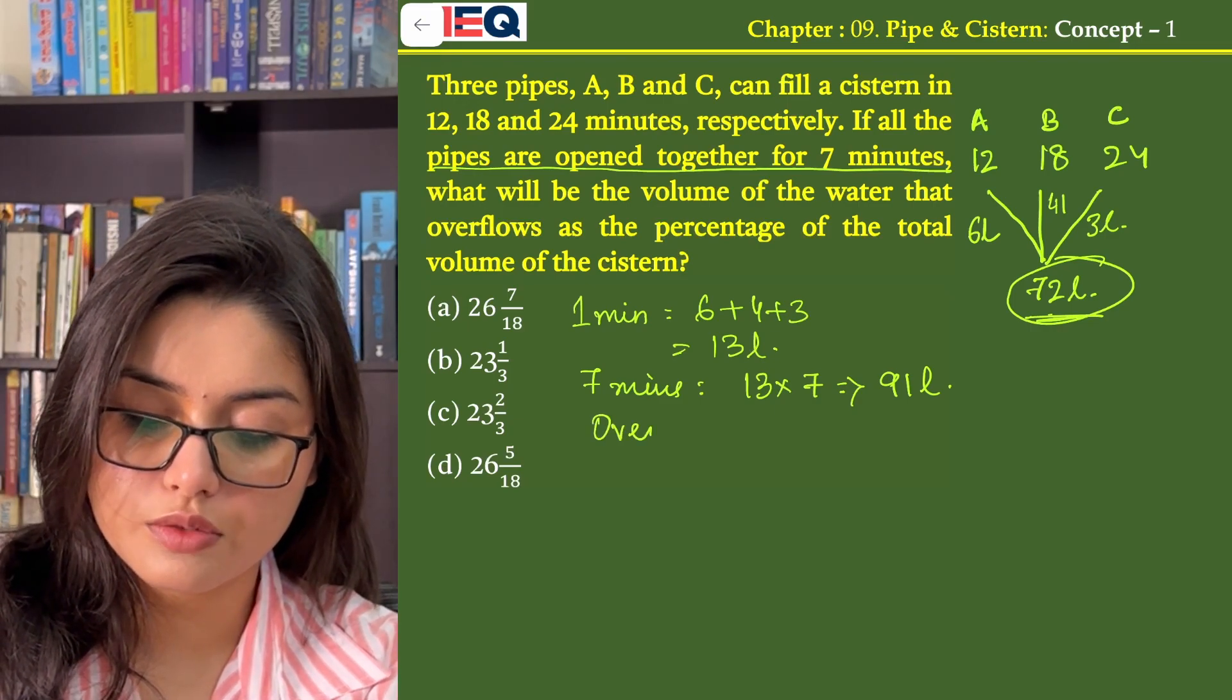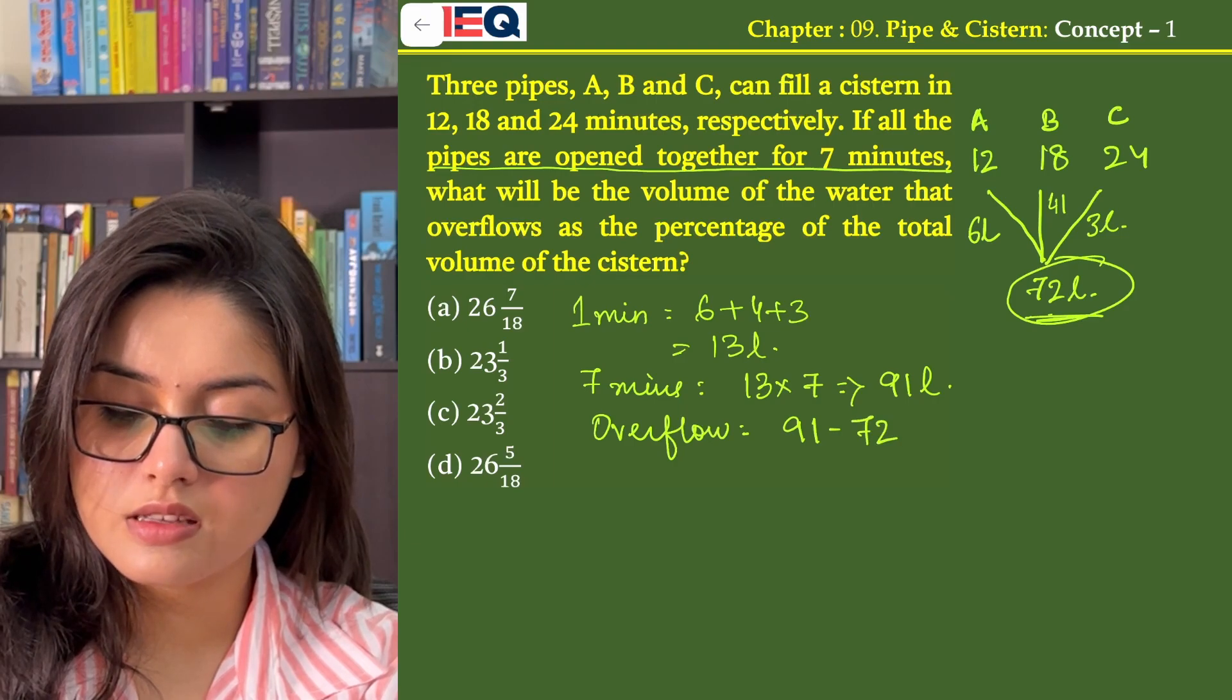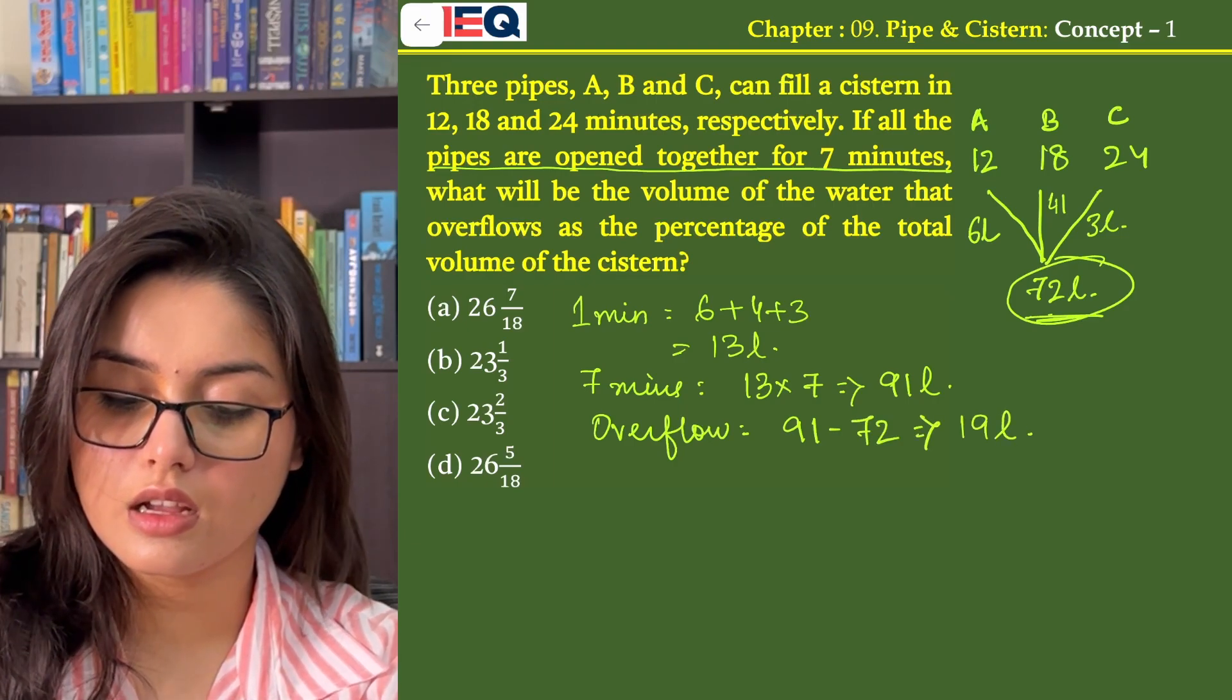So overflow is of how much? Overflow of 91 minus 72 which is 19 litres.